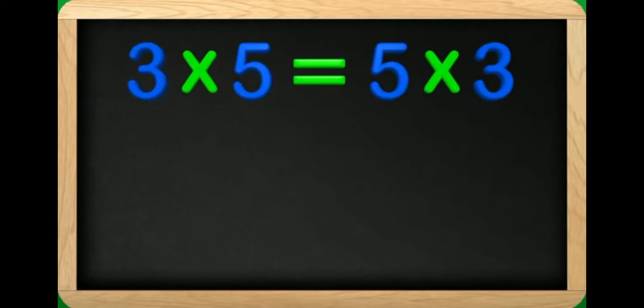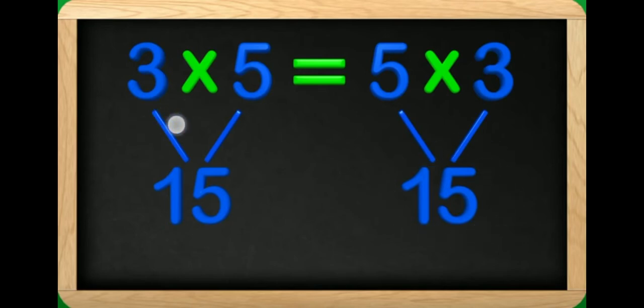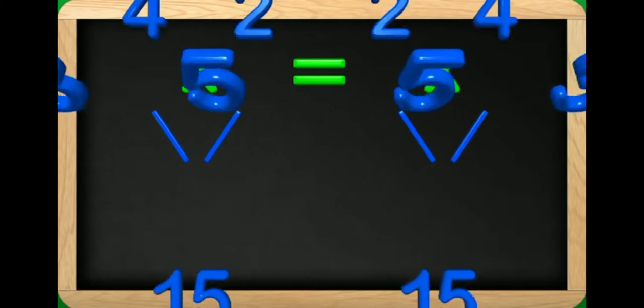Let us see the example. 3 into 5 is equal to 5 into 3. Let us see 3 into 5, we will get 15 here. And if we multiplied 5 into 3, we will get again 15 here. So we can say that either we can do 3 into 5 or we are doing 5 into 3, we are getting the same answer. So 3 into 5 is equal to 5 into 3.